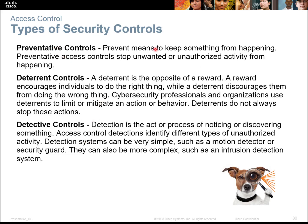Types of security controls: preventative controls stop unwanted and unauthorized activity. Deterrence controls — such as extra security at the doors and extra cameras — discourage activity but don't always stop it. Detective controls act as a means of discovering and identifying unauthorized activities, such as accessing the building or systems outside of normal hours or doing something out of sync with what you would normally be doing. These three types need to be considered when securing your organization.